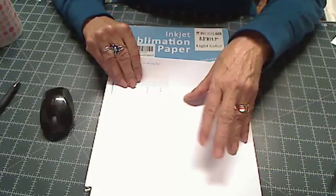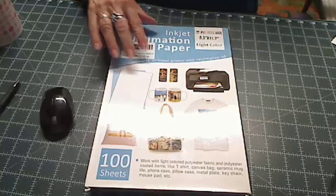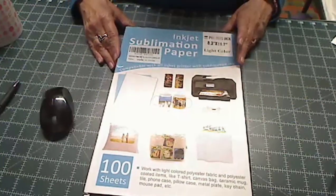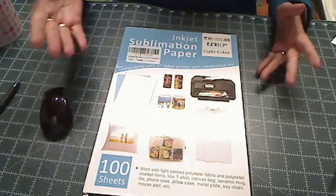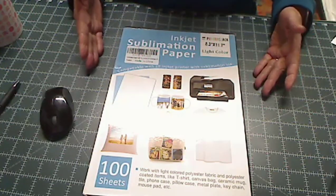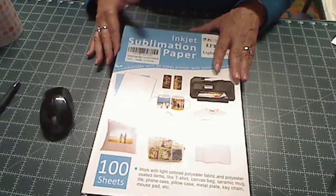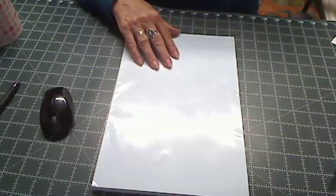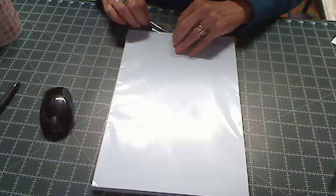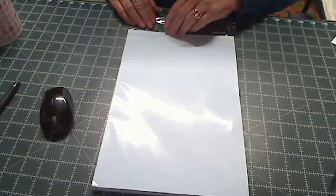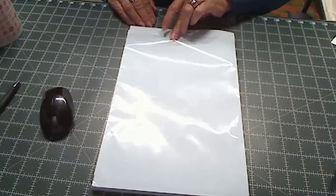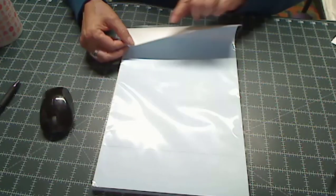Speaking of the good stuff, this is the stuff I've used today. I got a hundred sheets of it. It worked really well. This is what it looks like - it looks blue on one side and white on the other side. You print on the white side.